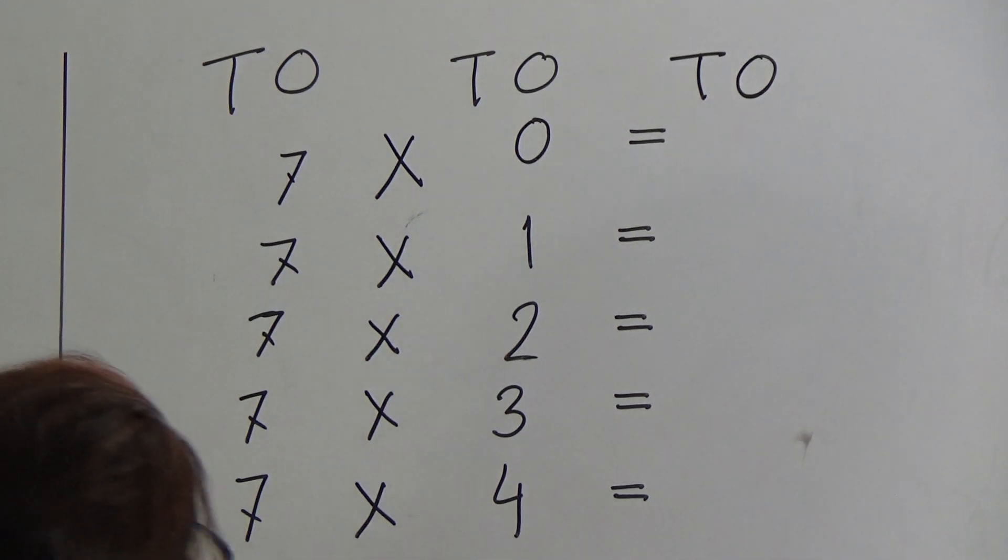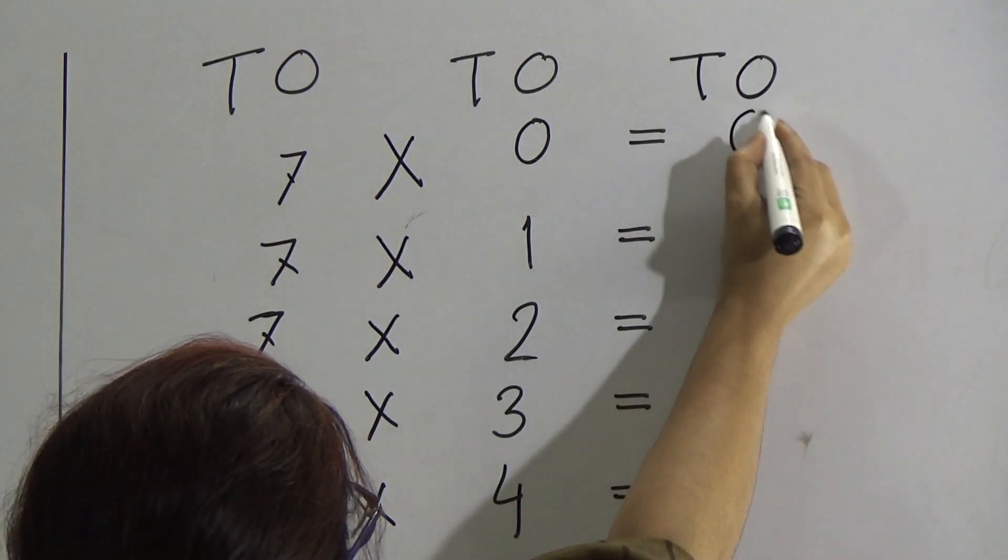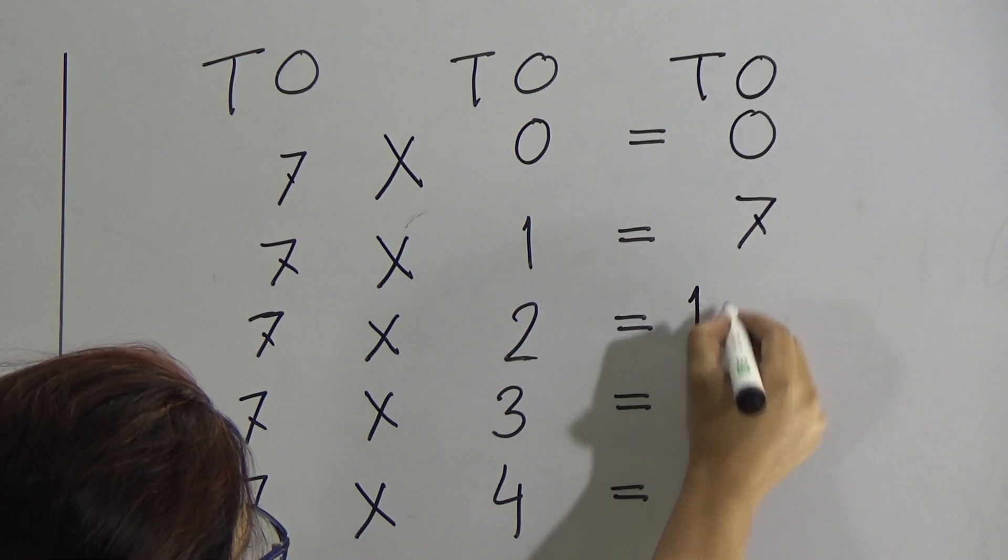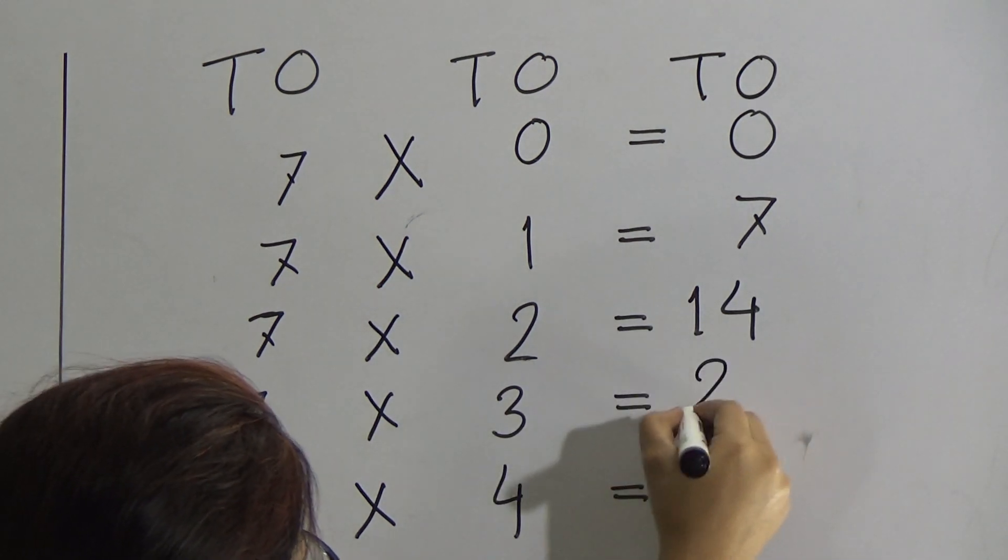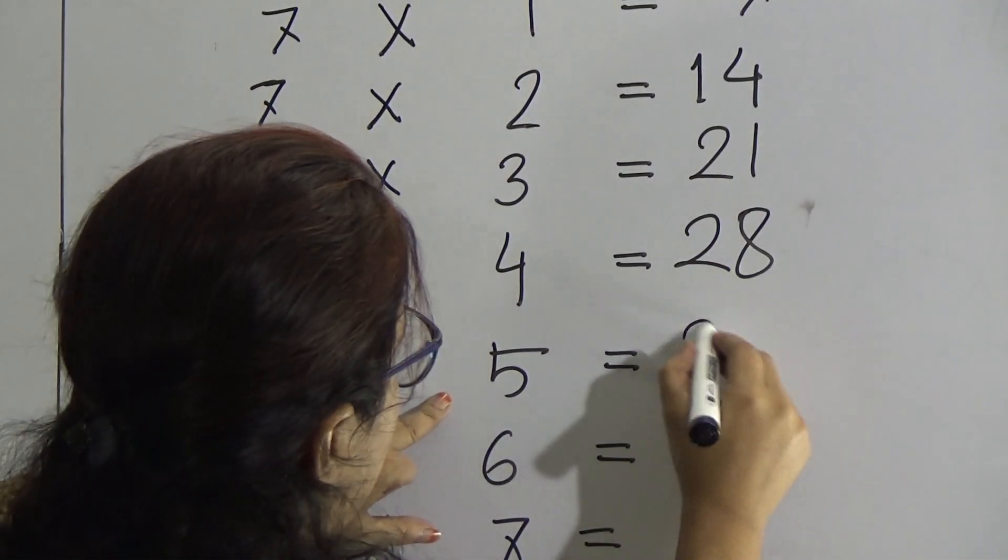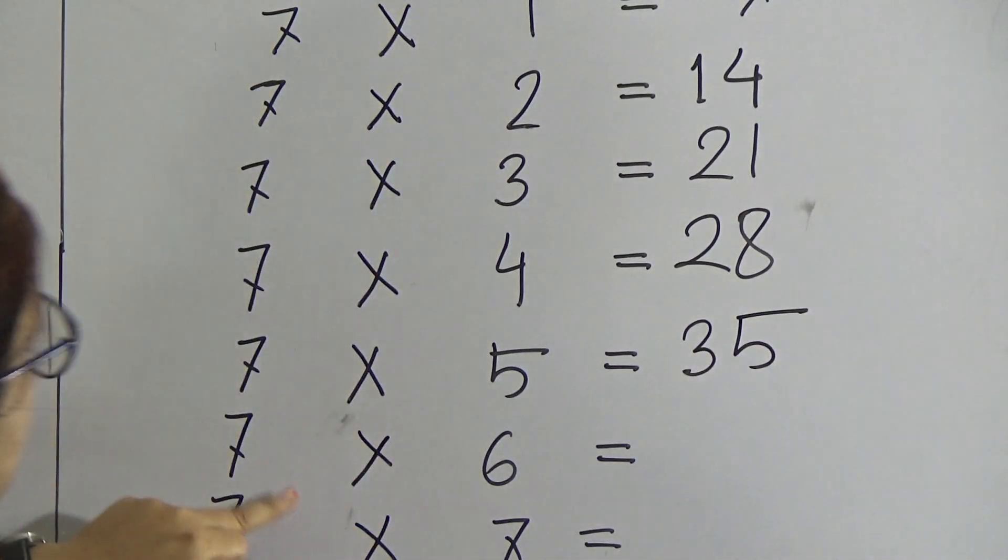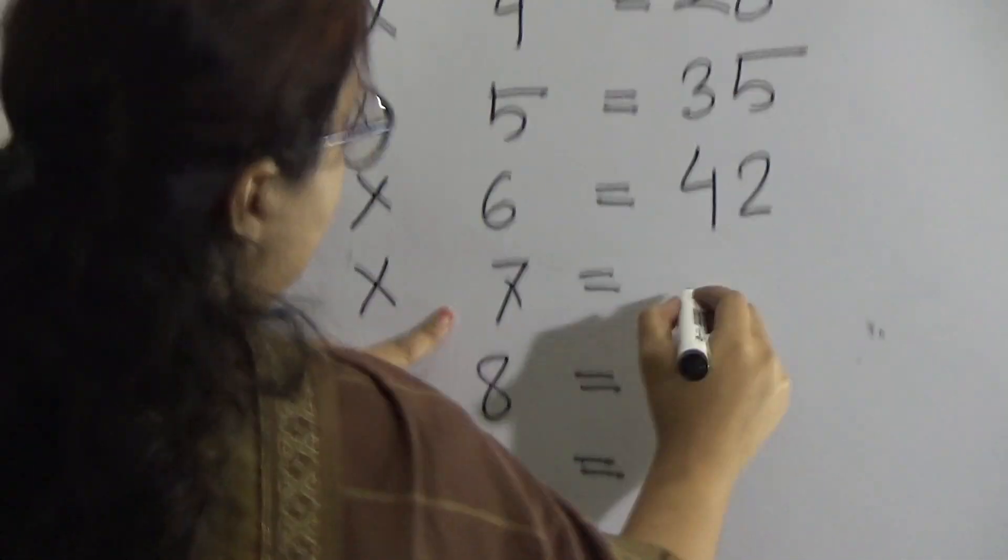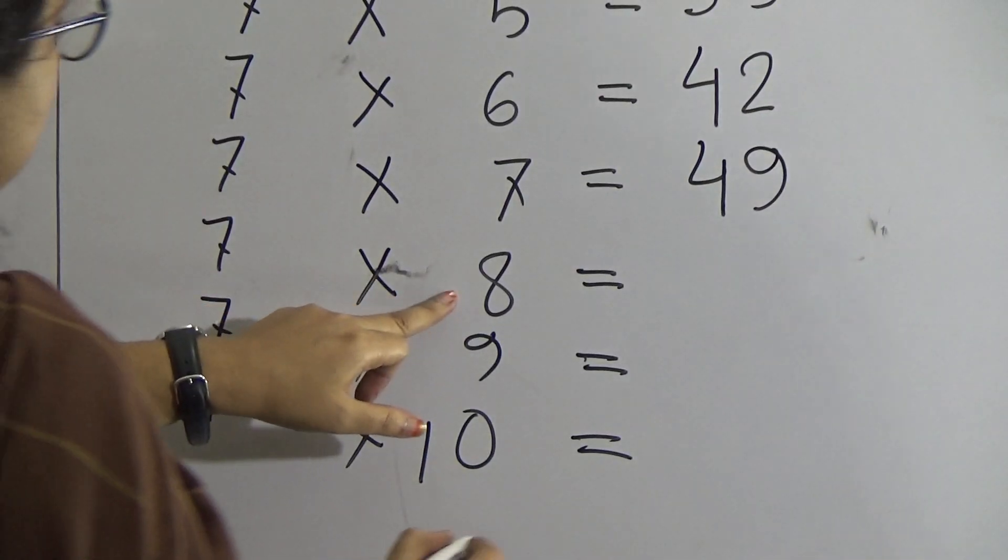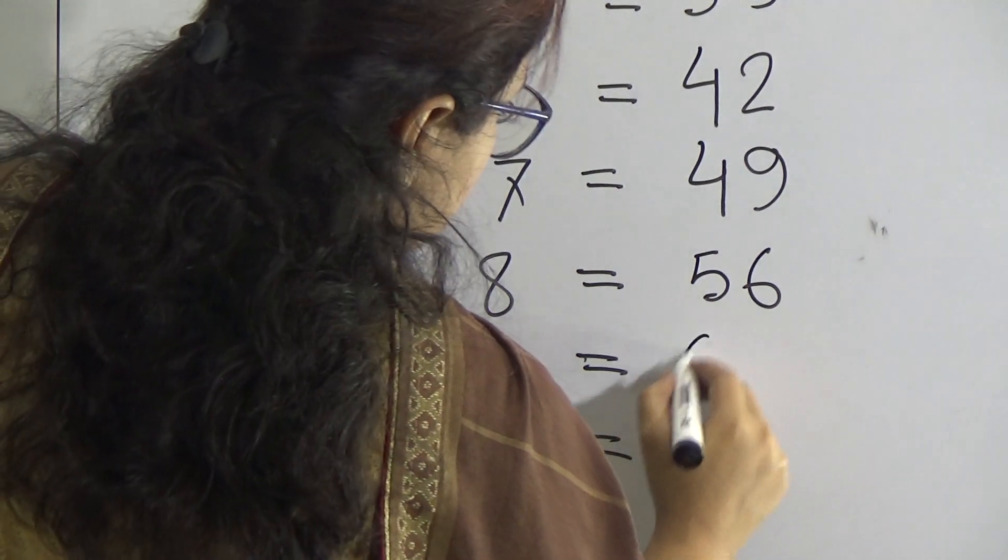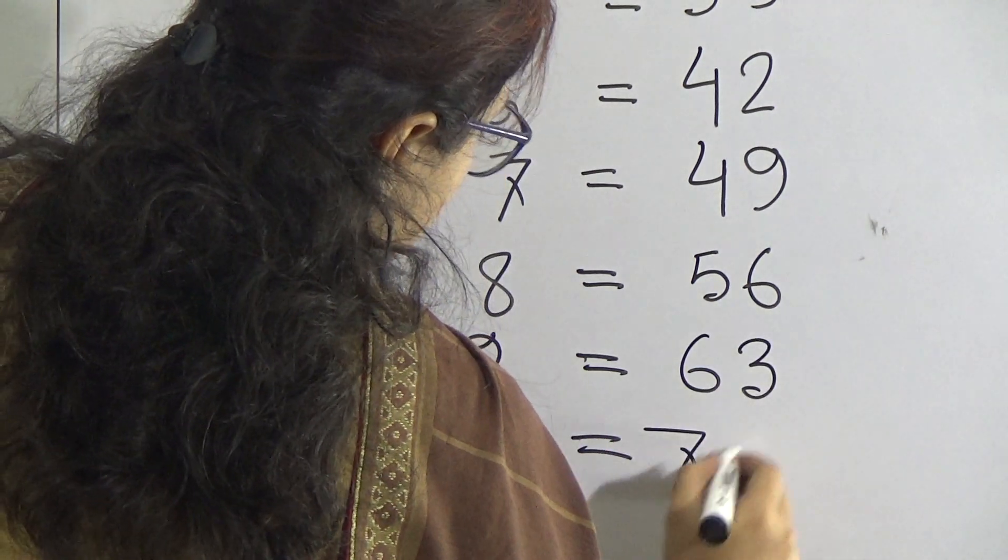Now last one, times table of 7. Dear students you repeat after me. 7 times 0 is 0, 7 times 1 is 7, 7 times 2 is 14, 7 times 3 is 21, 7 times 4 is 28, 7 times 5 is 35, 7 times 6 is 42, 7 times 7 is 49, 7 times 8 is 56, 7 times 9 is 63, 7 times 10 is 70.